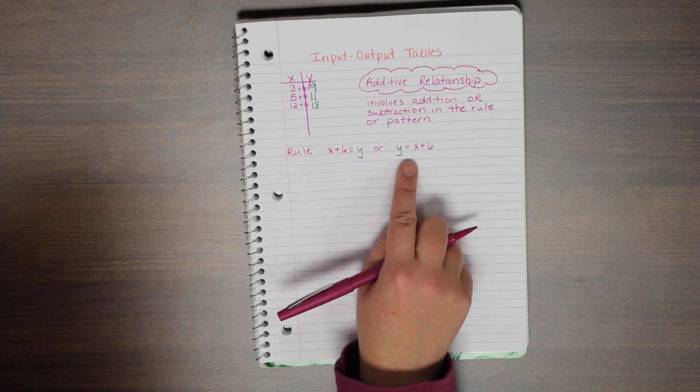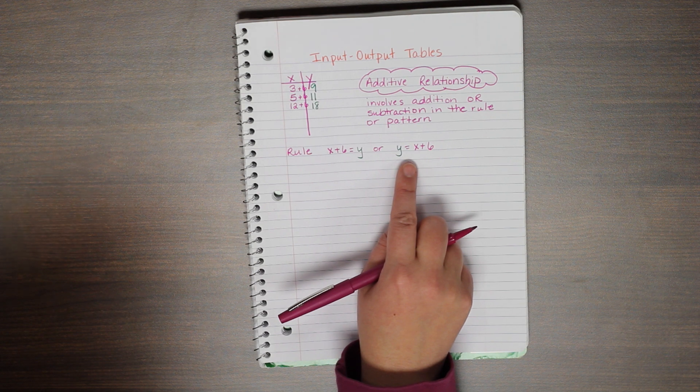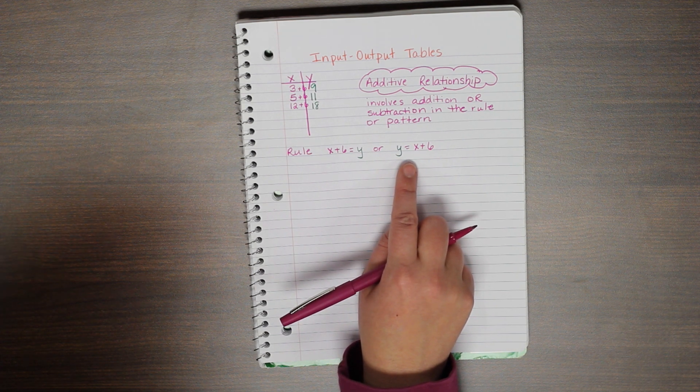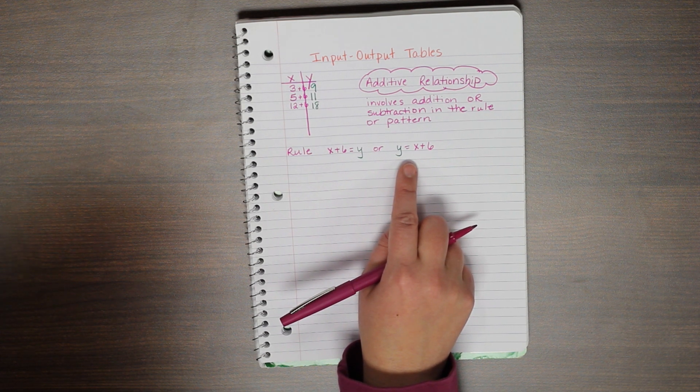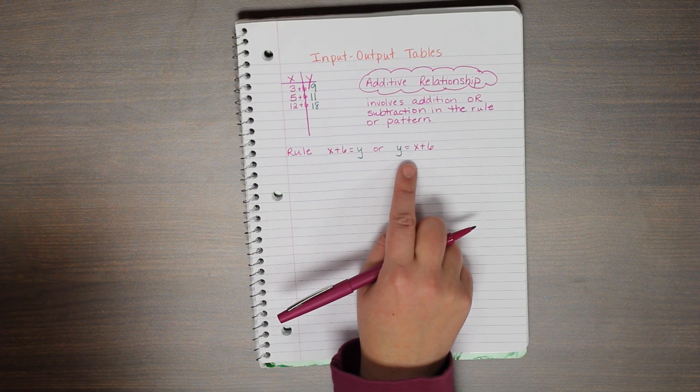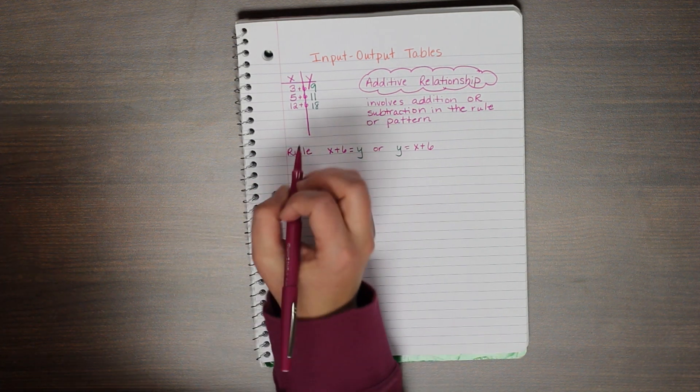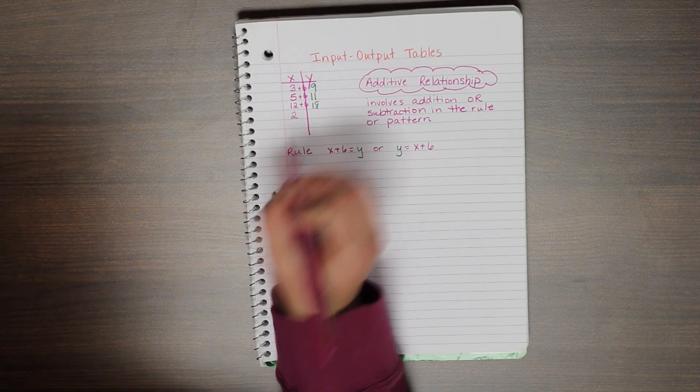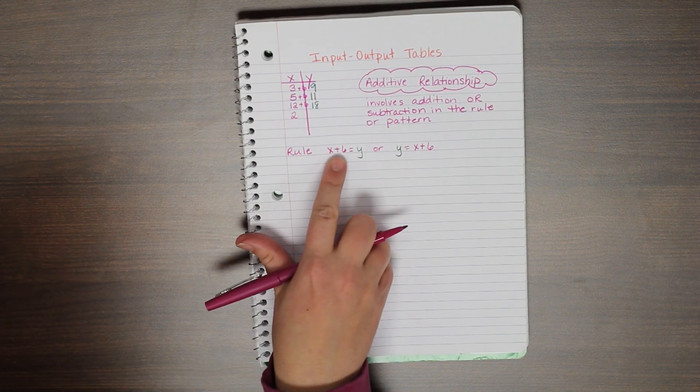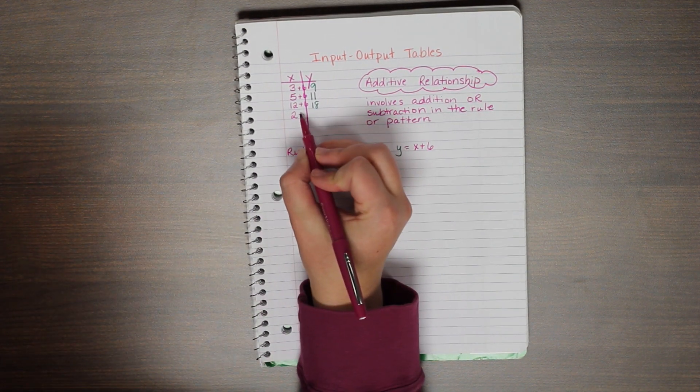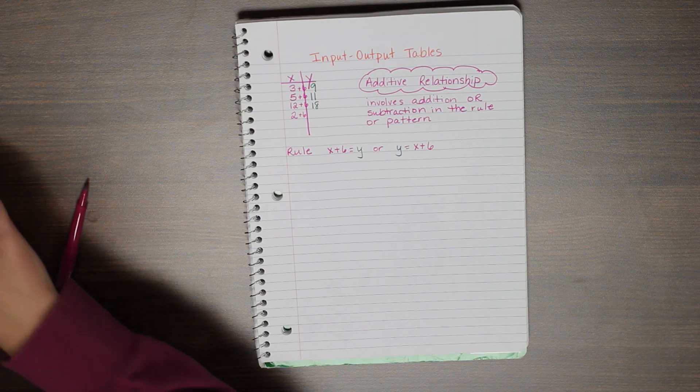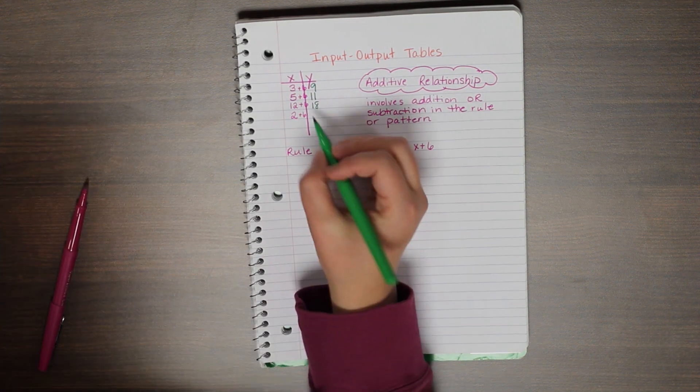Once we've determined the rule or the pattern, we can use this to help us find new values to continue our table. So for example, if I now told you this time I want you to tell me what y equals if x equals 2, well, now that I know the rule is plus 6, I simply have to add 6 to it to figure out that my next y is 8.